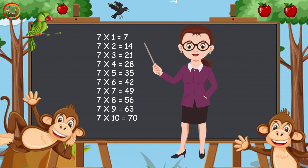Seven twos are fourteen. Seven threes are twenty-one. Seven fours are twenty-eight. Seven fives are thirty-five. Seven sixes are forty-two. Seven sevens are forty-nine. Seven eights are fifty-six. Seven nines are sixty-three. Seven tens are seventy.